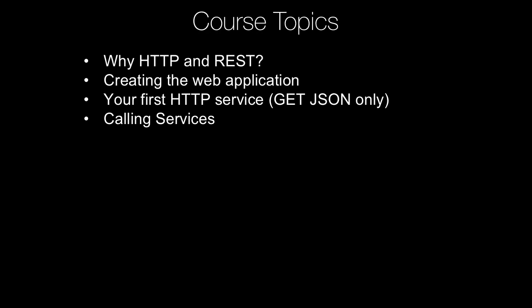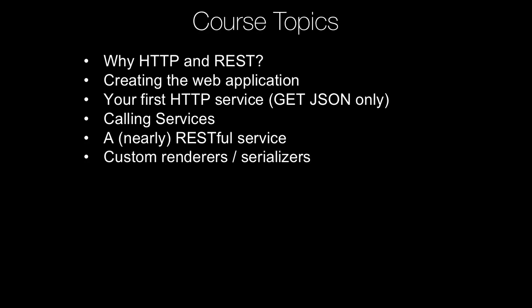Then we'll take a diversion from the server side to look at two ways to call these services — how to call the service we just created with Python, and also how to consume it within our web application using JavaScript. Next up, we're going to build a nearly RESTful service. Describing something as RESTful or not isn't a Boolean answer — it's more like a spectrum. We'll go most of the way, say 85–90% towards a RESTful service. Then we'll add the ability to have more than just basic JSON or HTML responses: CSV, images, XML — extending Pyramid to add all these different response types.